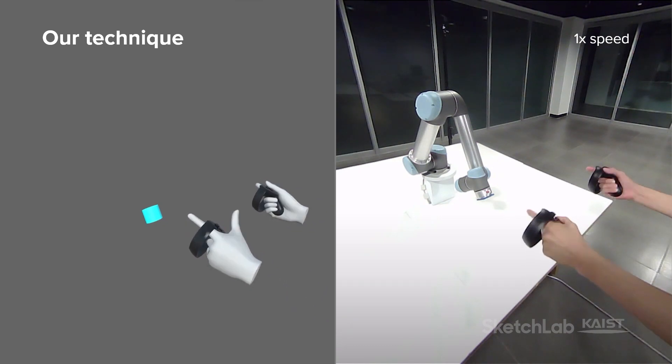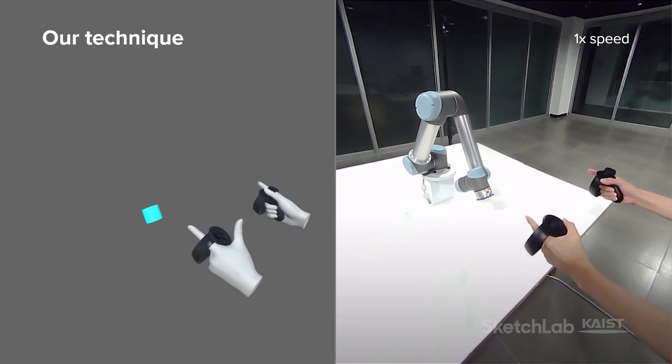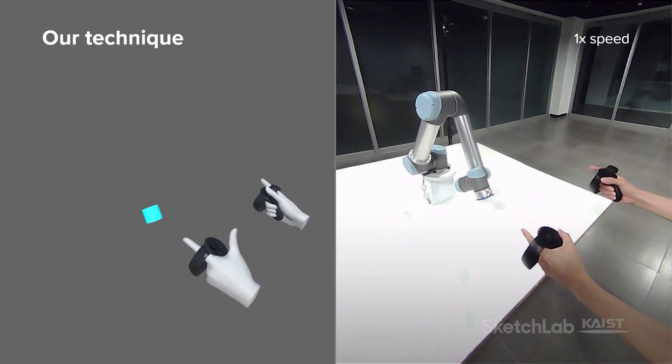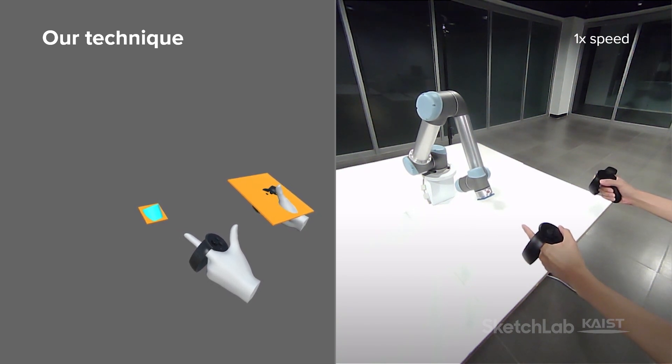Our technique uses 6 degrees of freedom real-time movements of two hands captured with any cheap off-the-shelf devices such as VR controllers. When the user activates the controller in the right hand, a pair of virtual planes are created at the right hand and at the end effector of the robot.